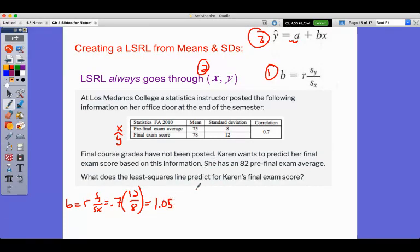And now we can plug in Y equals A plus BX. And I'm going to plug in my X bar and Y bar, so my means. So my Y bar is 78 equals A plus 1.05 times 75.